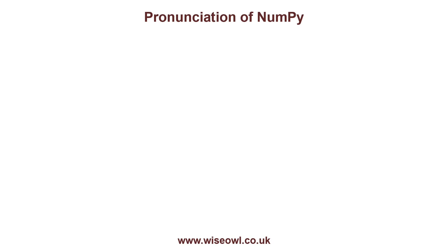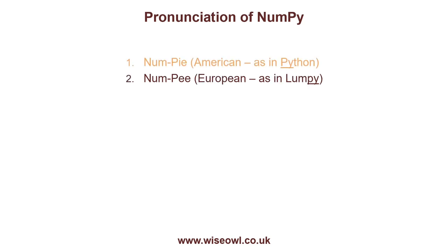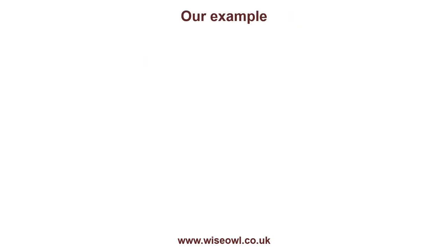Before we begin looking at what NumPy is, let's look at one of the most controversial topics: how you pronounce the name of the module. There are two schools of thought. Americans will probably be inclined to pronounce it NumPy — it is, after all, called Python. Europeans, particularly perhaps those Brits, tend to pronounce it NumPy to rhyme with lumpy. I can see merit in both approaches and I've probably already pronounced it in two different ways. I'm leaning towards NumPy because most of the modules have a 'pie' sound in them.